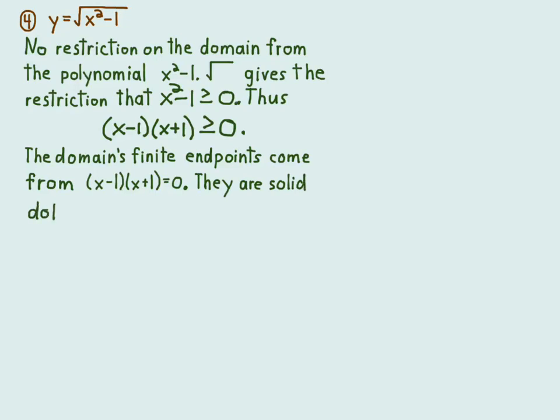In this case they're going to be x equals 1 and x equals minus 1, and they're going to be solid dots because it's greater than or equal to, not just strictly greater than—it's because of the equals part.